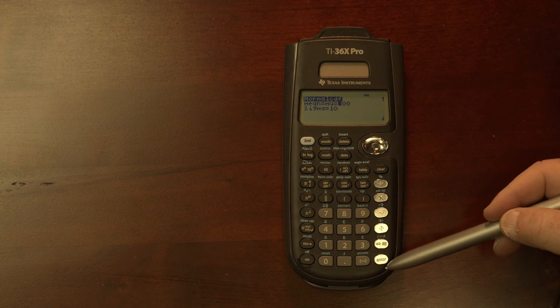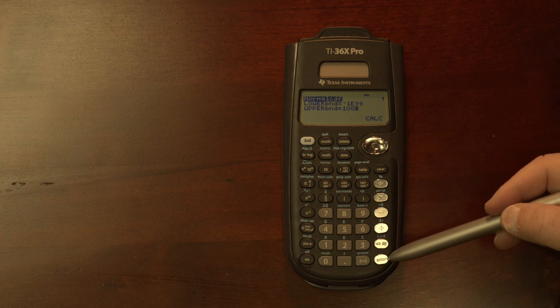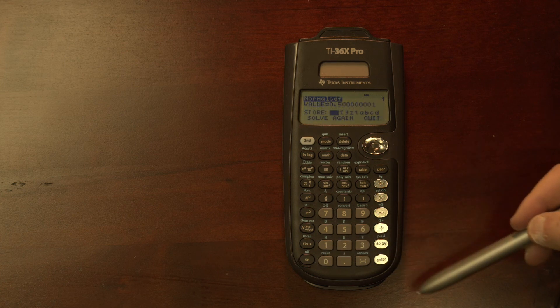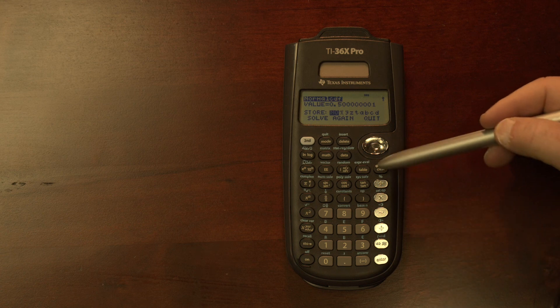Let's solve that again. It still enters in the information that we previously had. But now we are going to enter in 100, which is the mean value. Hit enter and then calculate, and it gives us the value we would expect, 0.5, 50%.